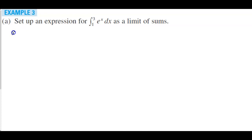First, let's identify what f of x represents. We know that f of x is equal to e to the x — that is the function. We also know that the value of the lower limit a is equal to 1, and the value of the upper limit b is equal to 3.